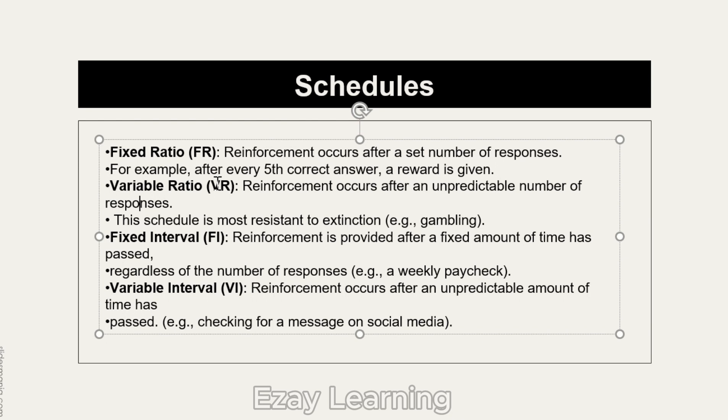For variable ratio or variable interval, we find the average. For example, if reinforcement is given after the 3rd, then 5th, then 4th correct response, you add 3 + 5 + 4 = 12, then divide by the total number of reinforcements (3), giving an average of 4. This would be reported as VR4 — meaning the average, not that reinforcement occurs after every 4th response.